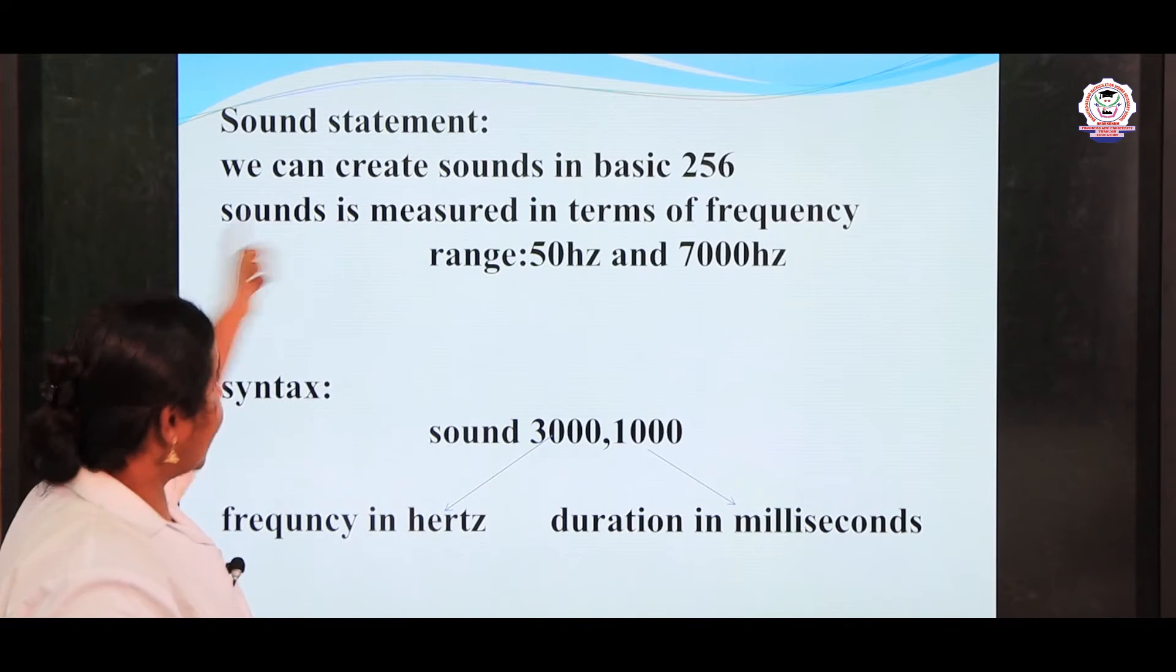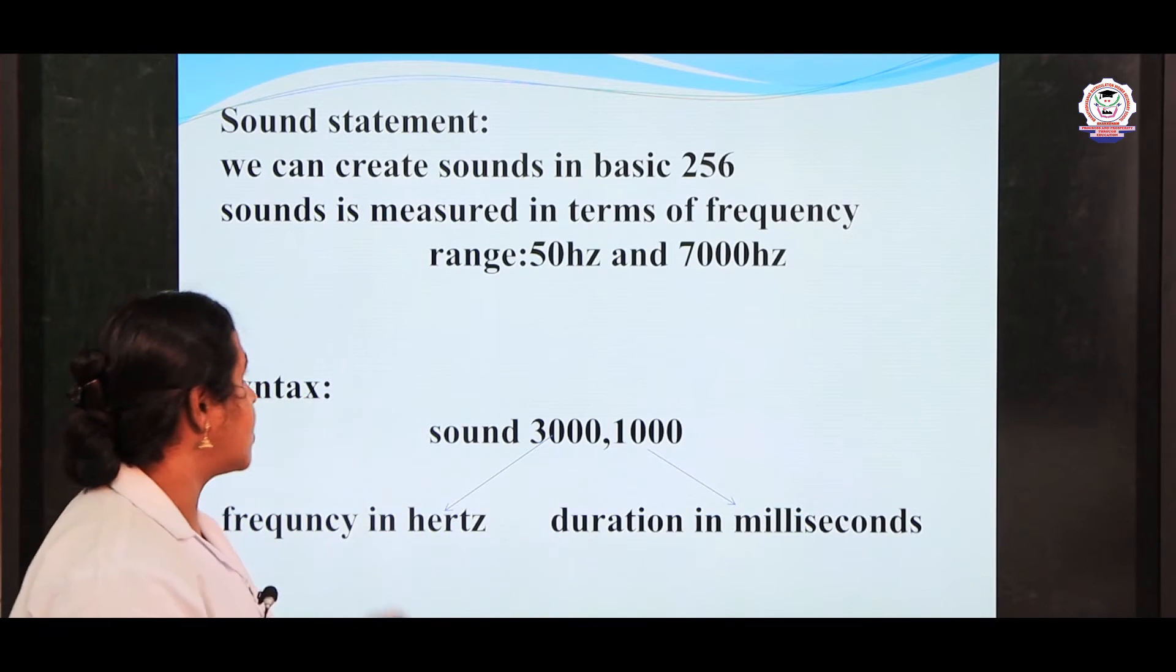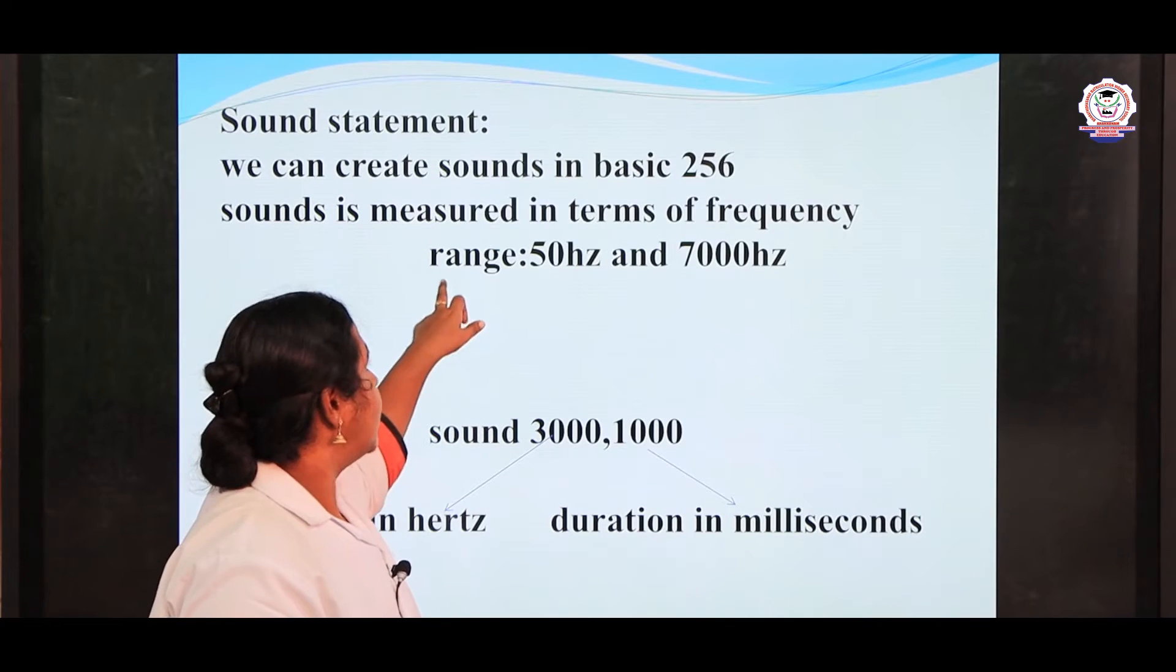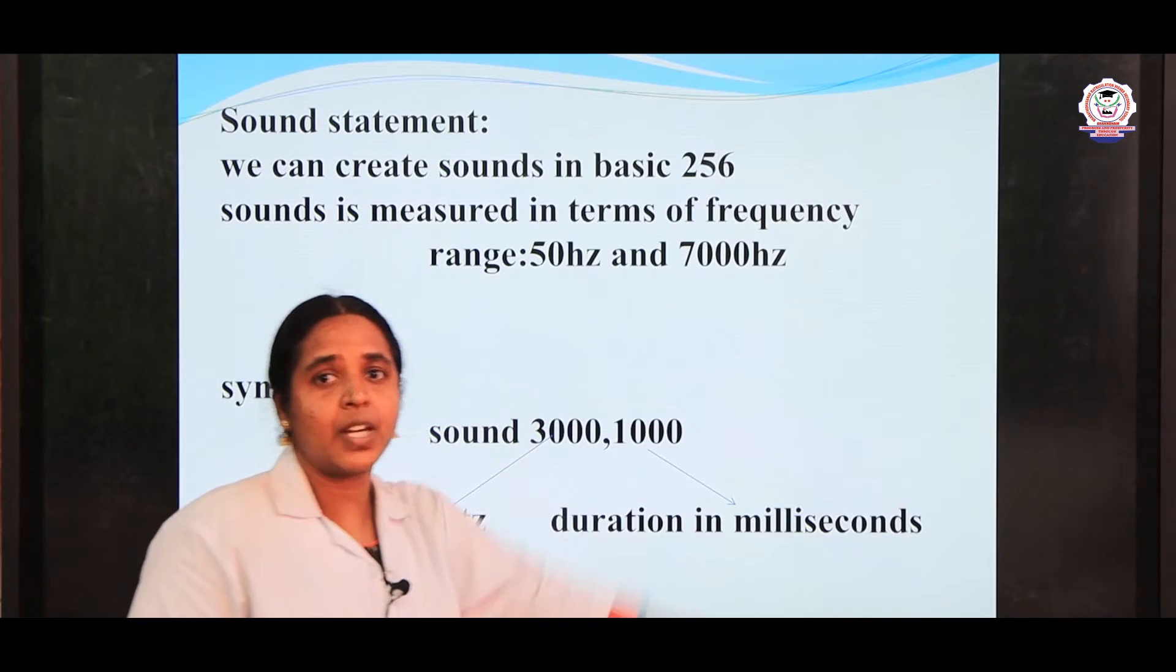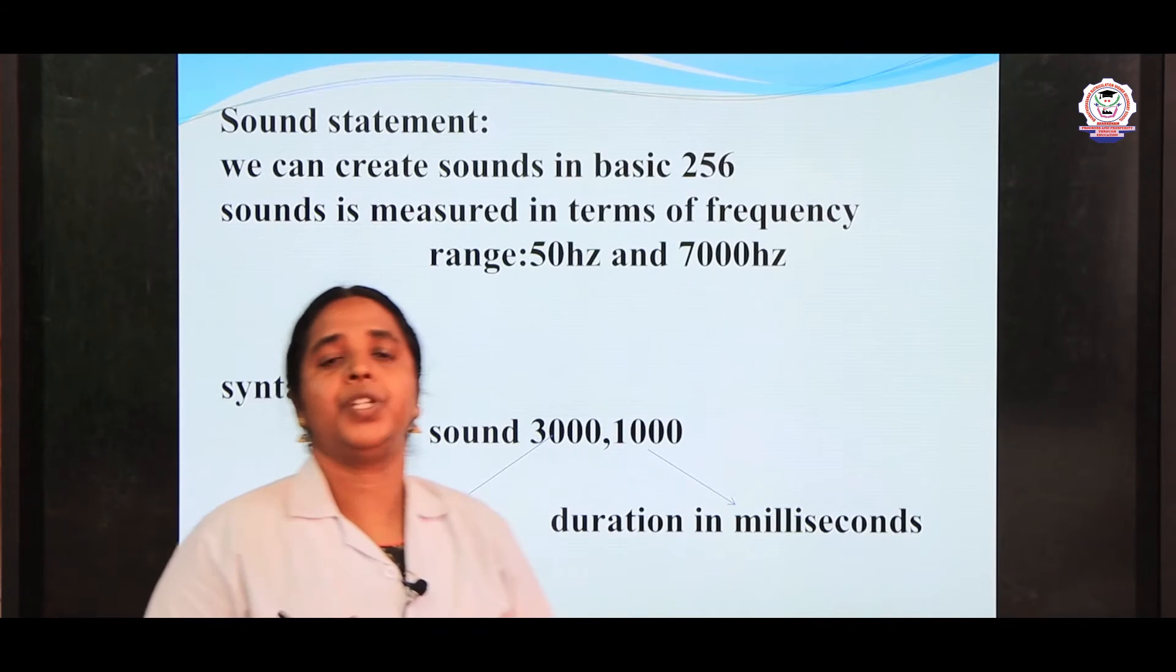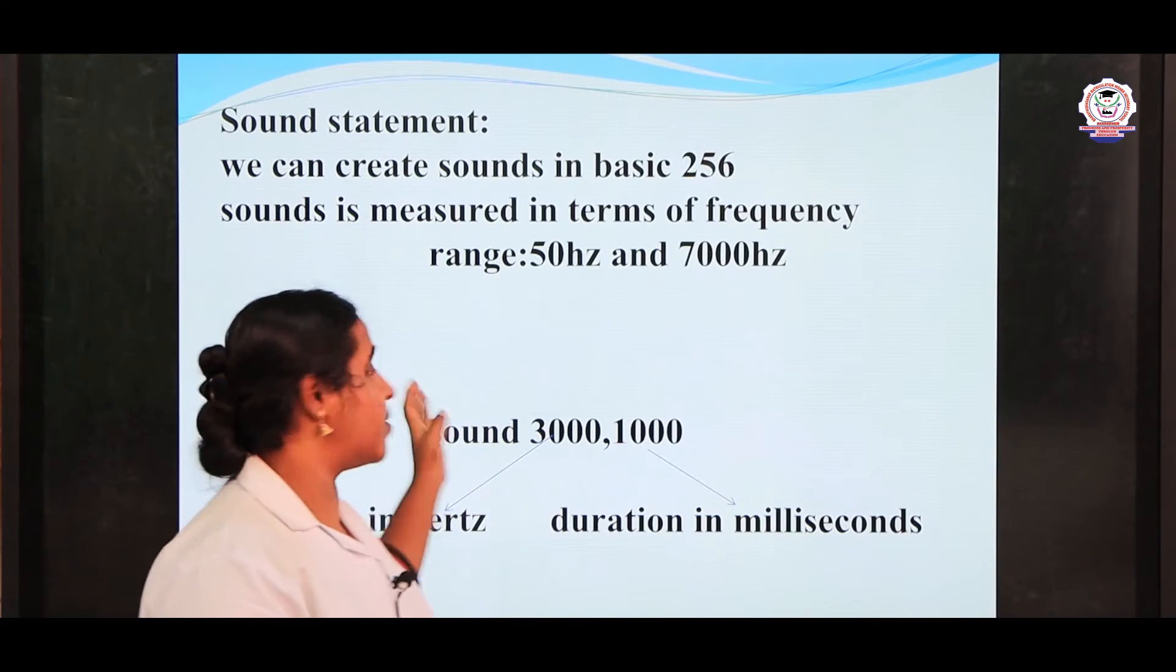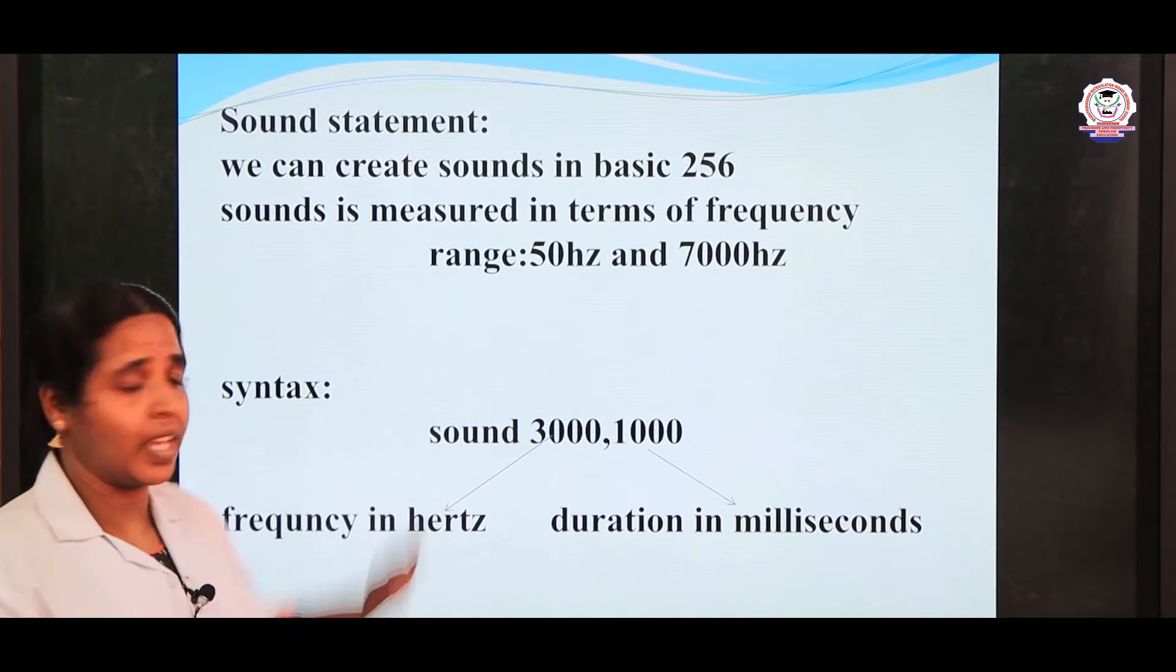We can create sound in BASIC 256. Sounds are measured in terms of frequency ranges. In this program we have a range between 50Hz and 7000Hz. If you are going to write a program using BASIC 256, the sound frequency should be 50 hertz to 7000 hertz.